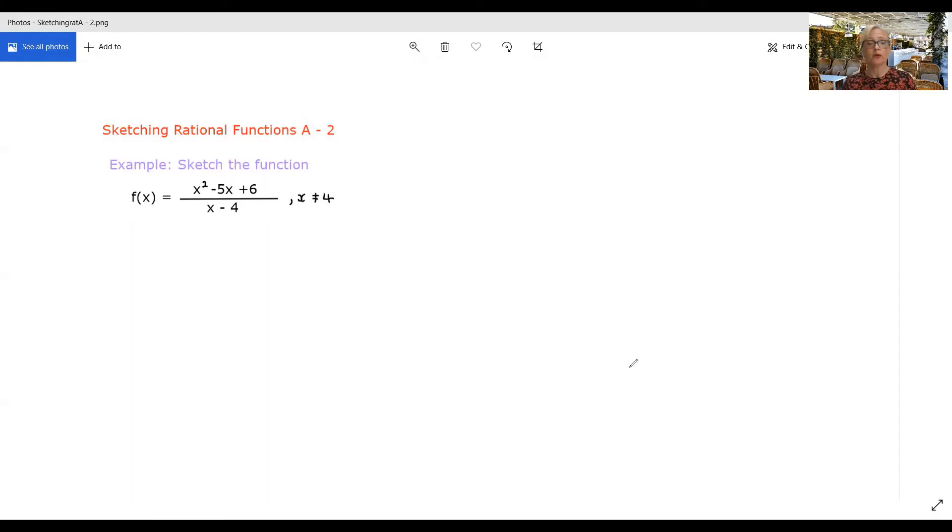For example, in order to find the x intercepts, I'm going to need to know when the numerator is zero because that's the only time that this function will be zero. And in order to do that, having it factorised would be a good idea. So I'm going to do that as one version of my function.